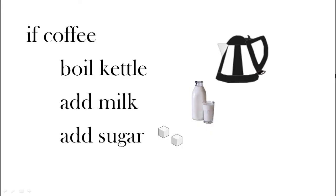Here we're going to make some coffee. So if coffee: boil kettle, add milk, add sugar. All of these things are together. Because they have the space underneath the if statement, we know they're part of that if statement.